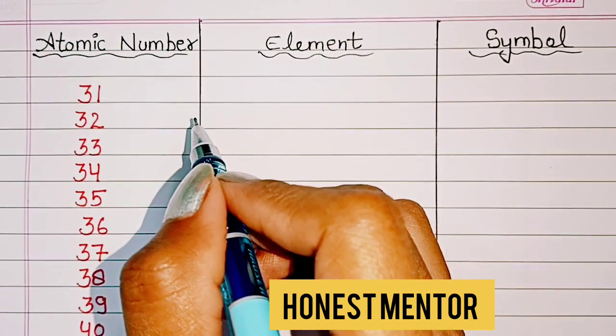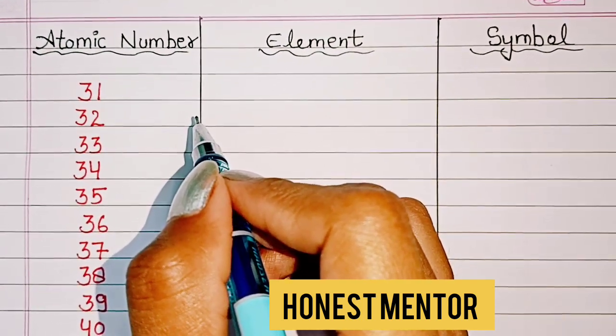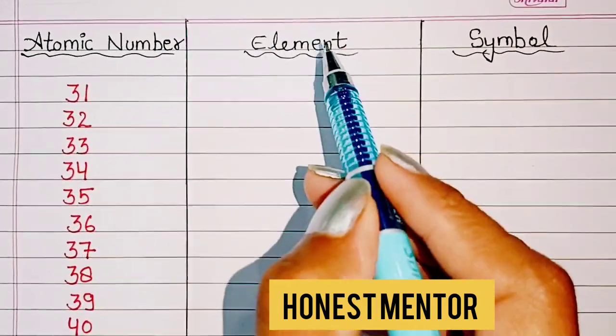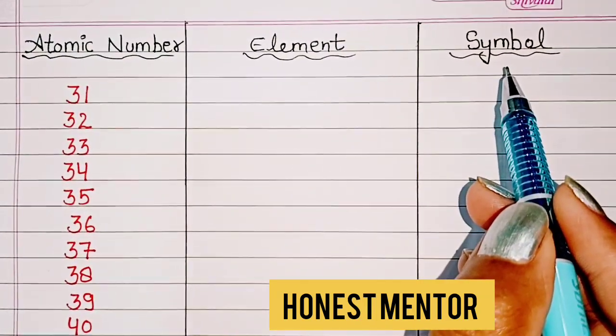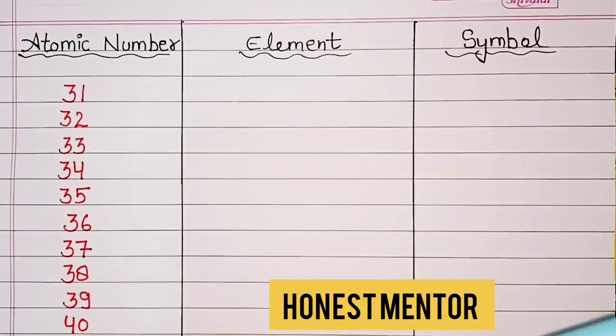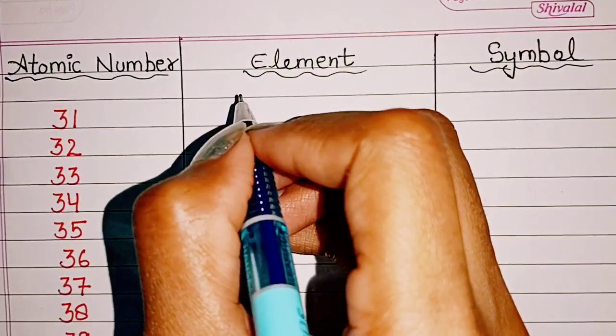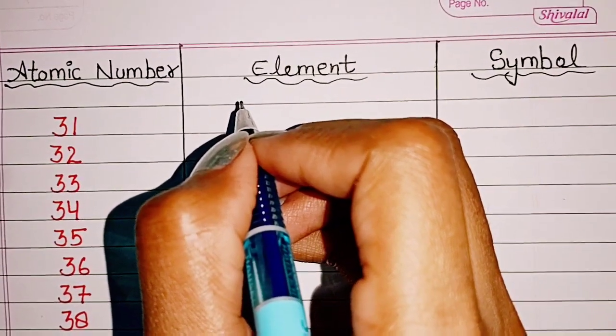Hello everyone, welcome to my channel. In today's video we are going to see atomic number, elements, and symbols 31 to 60. Let's start. So 31 is Gallium, symbol Ga.